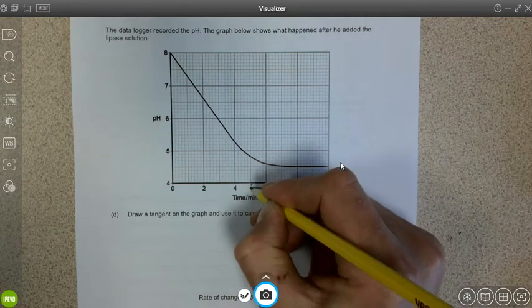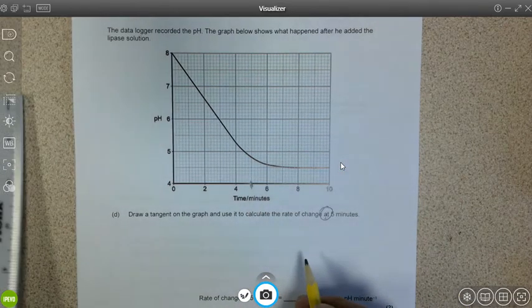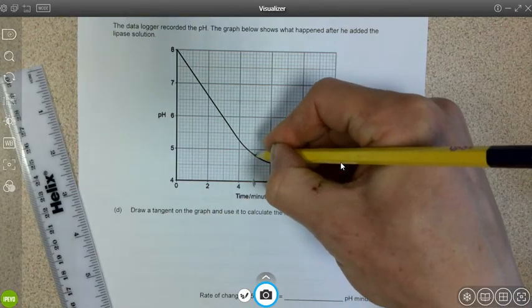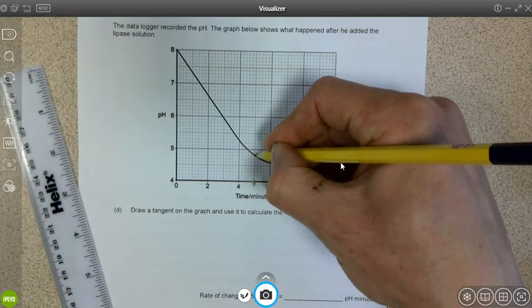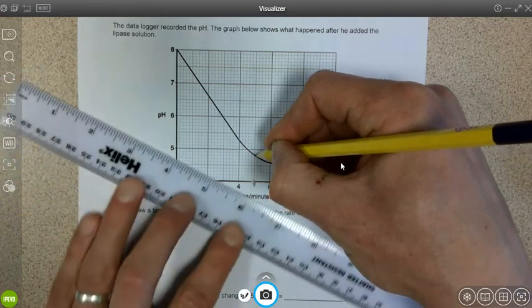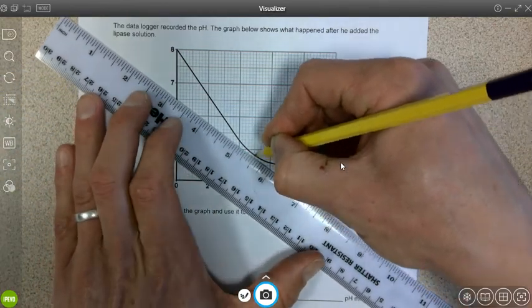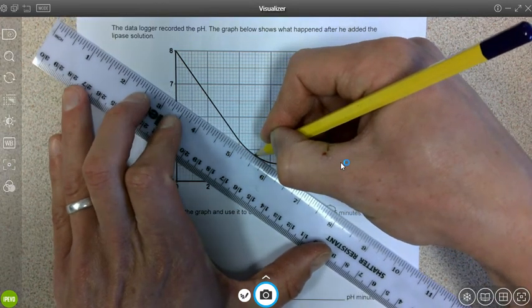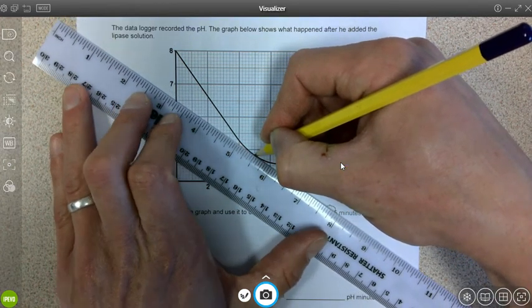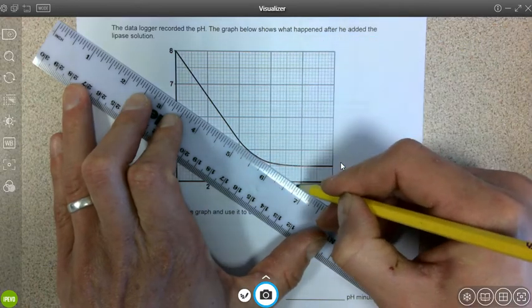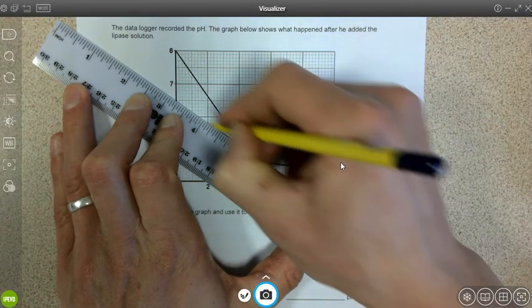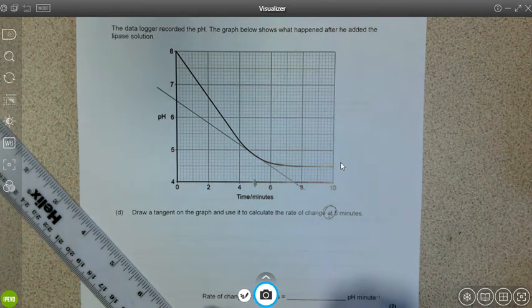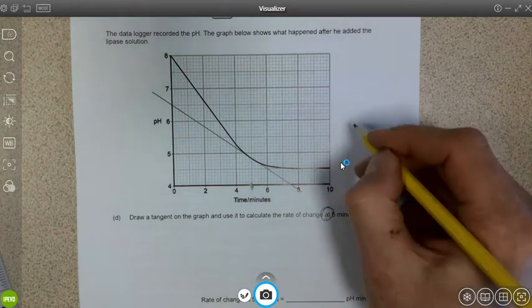If it says 'at,' it means we need to draw a tangent. Actually it already tells you that in this question, but this is what we're looking for. So reading up from five minutes we can get to this point on our curve, and if we draw a tangent that matches that, I think it's somewhere, I would say about there.